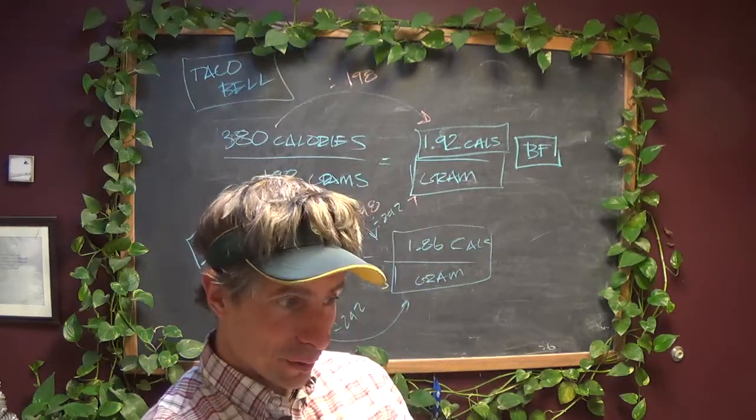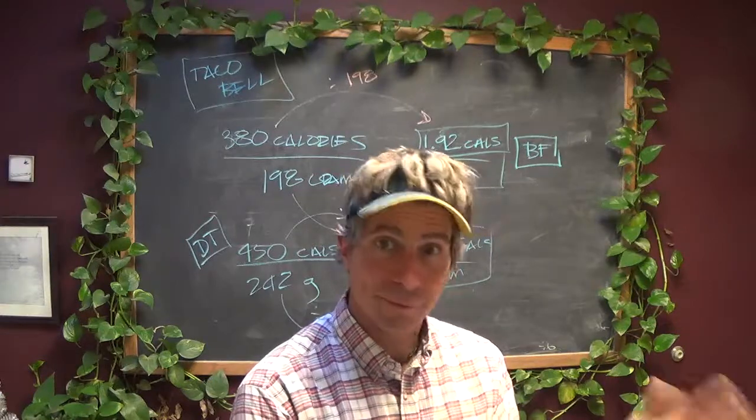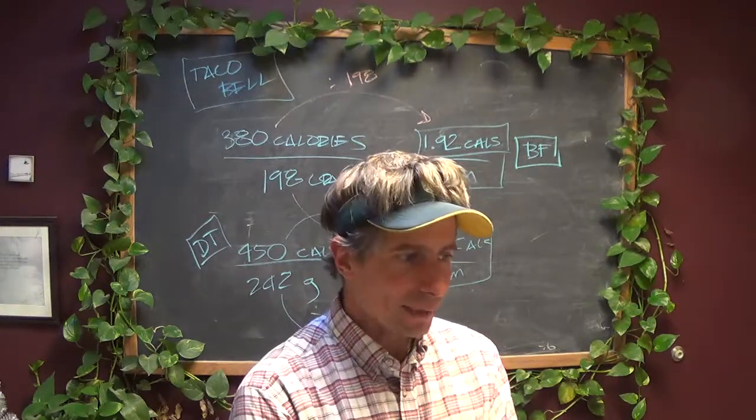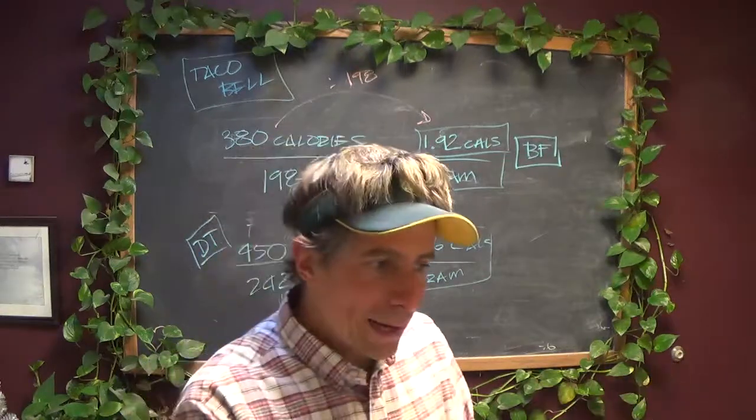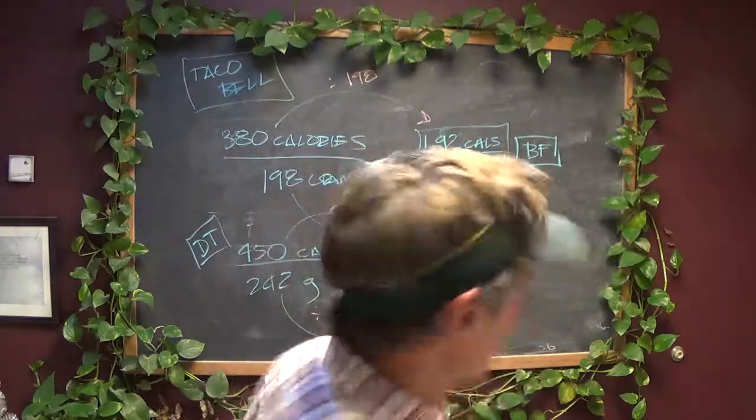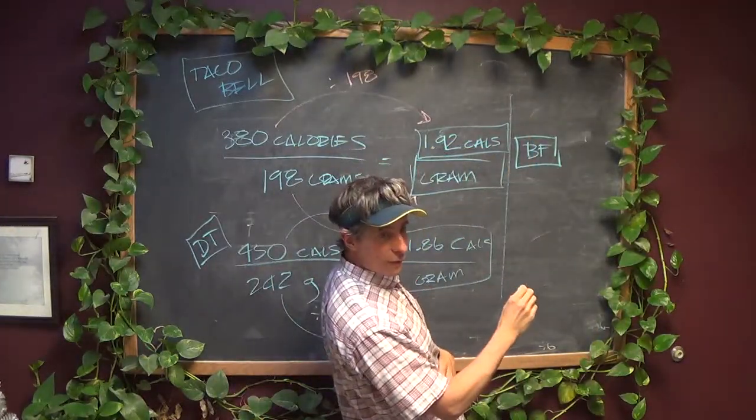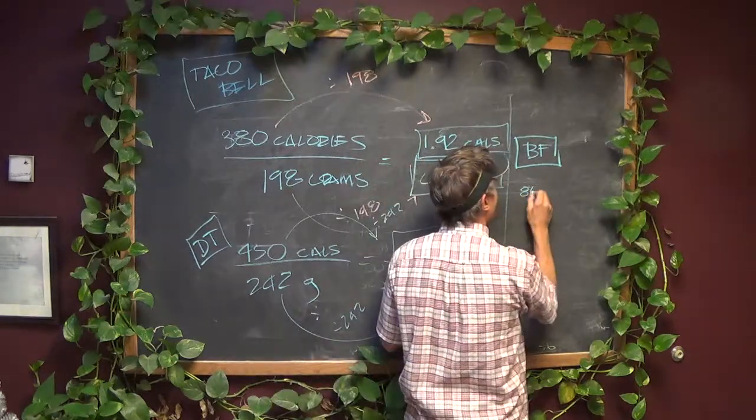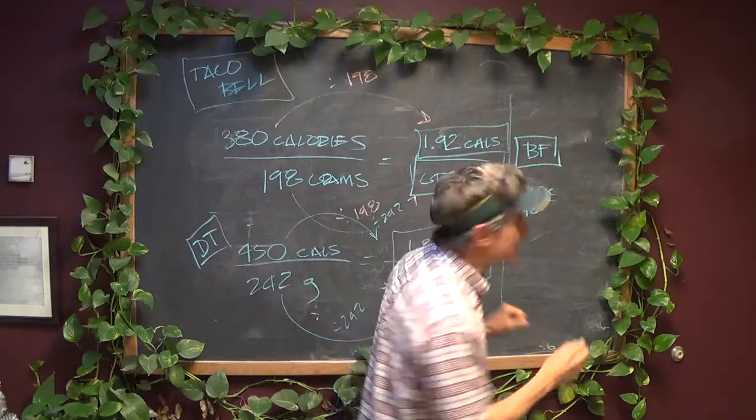But if you look at the actual weight, compare the weights, they're almost double. If you look at 242 to 473, if you double 242, you get 484. That's almost exactly how much a Baja Fresh burrito weighs. So if you double the weight, you would think you double the calories, but that's not what's going on.